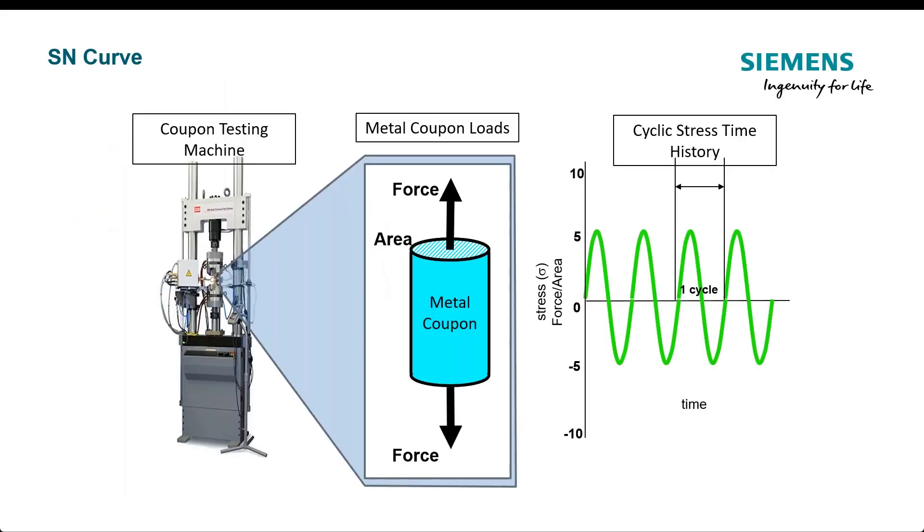So there are a lot of these coupon testing machines that cycle. One of the challenges is, if you really want to get it at the very low amplitude cycles, these tests can take a long time. For stress life, there is just a wealth of material out there on SN curve, and you can buy databases. For strain life, it's not so easy to get, and sometimes you have to run your own tests.